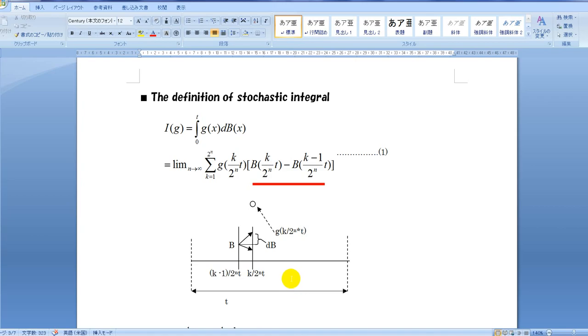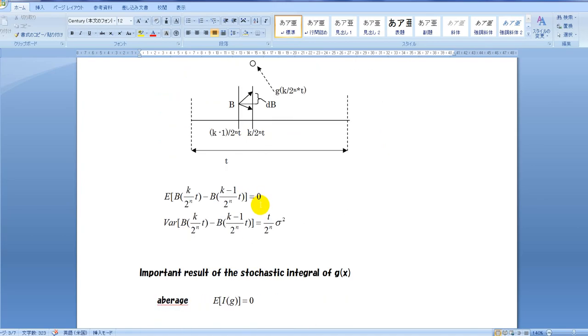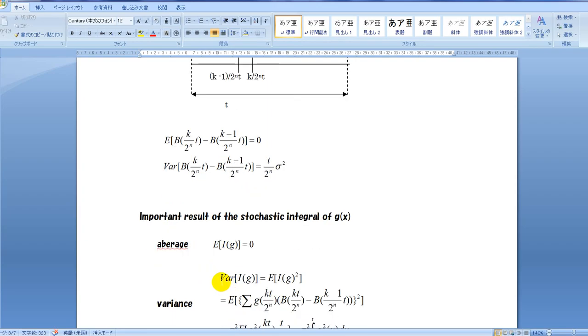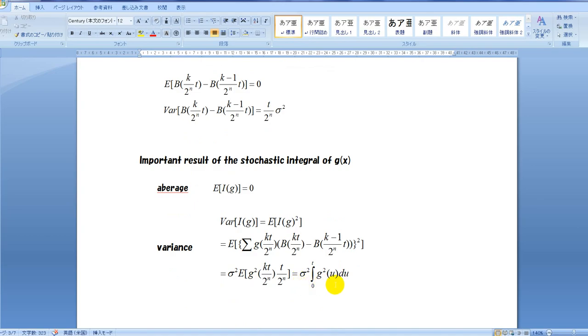The stochastic integral of function g(X) where X obeys the Brownian motion is defined as follows. The important result of the stochastic integral of g(X) is the expectation is always equal to 0 and the variance is calculated like this.